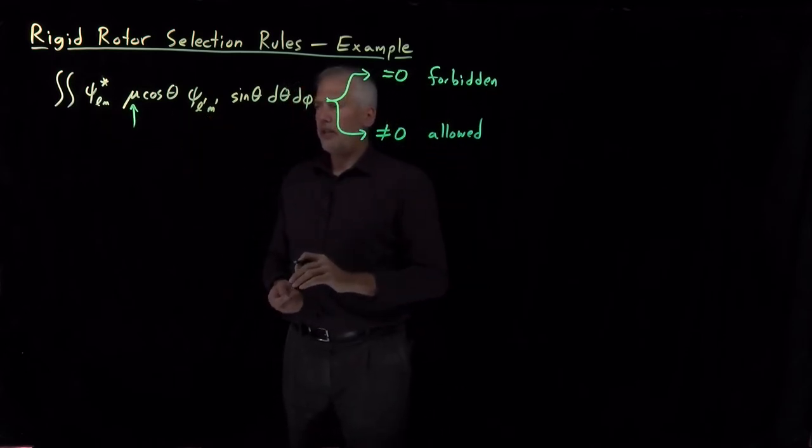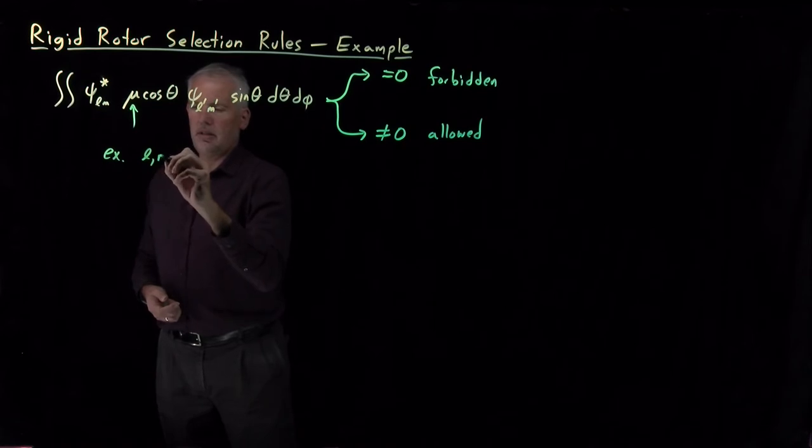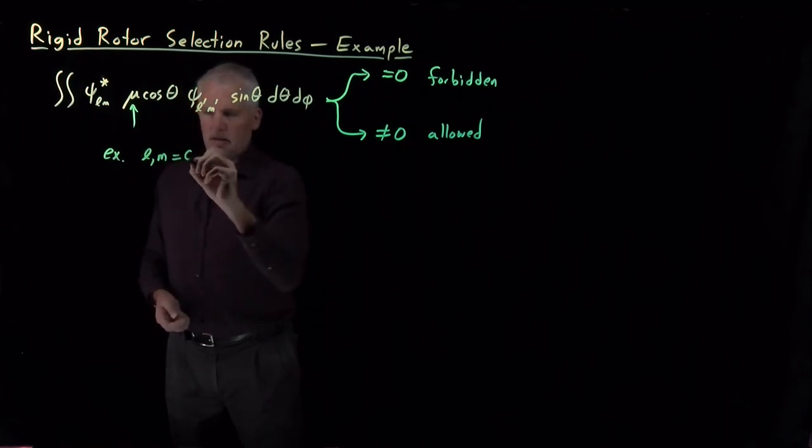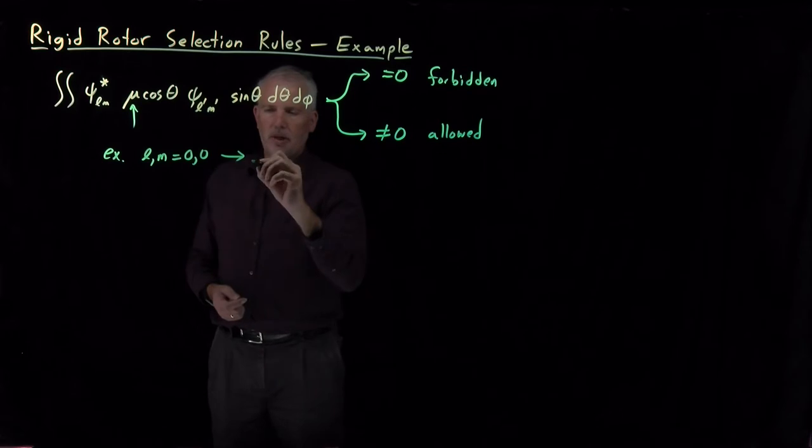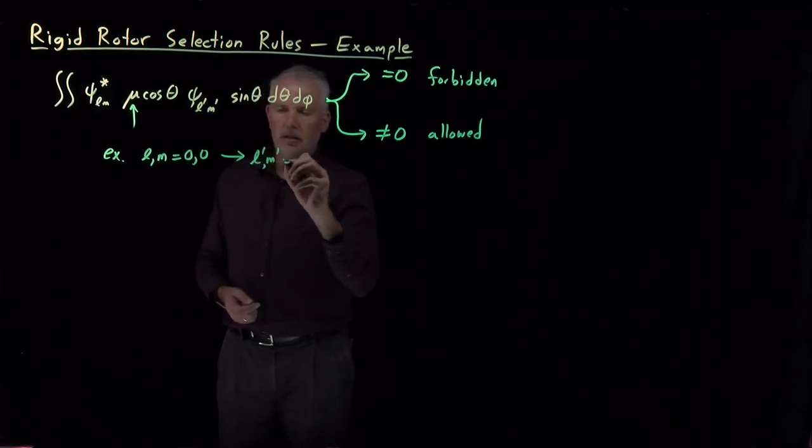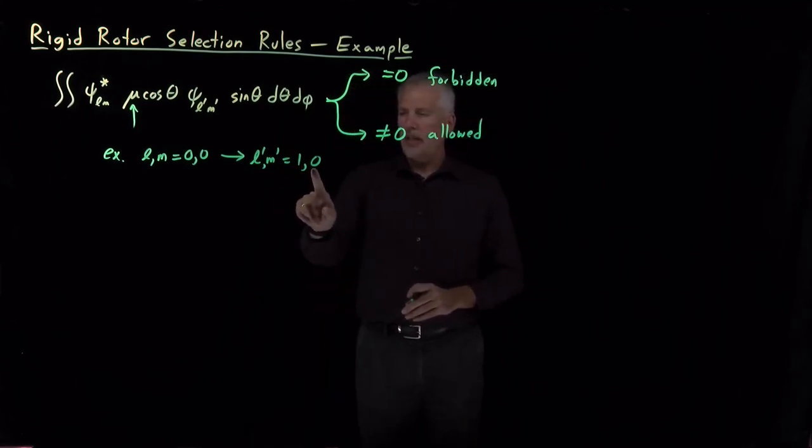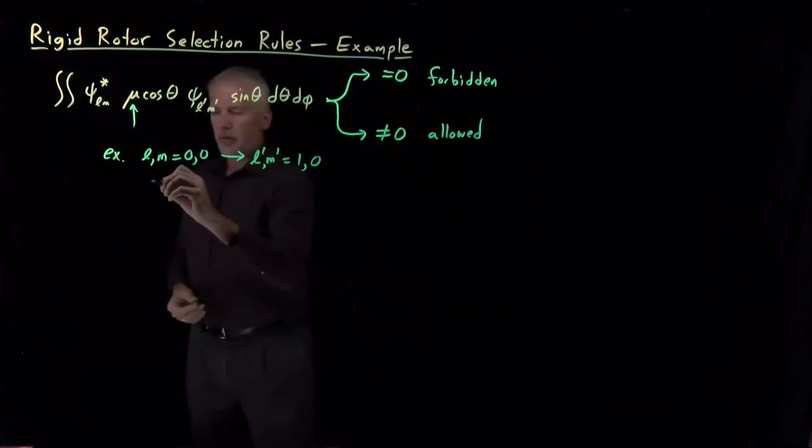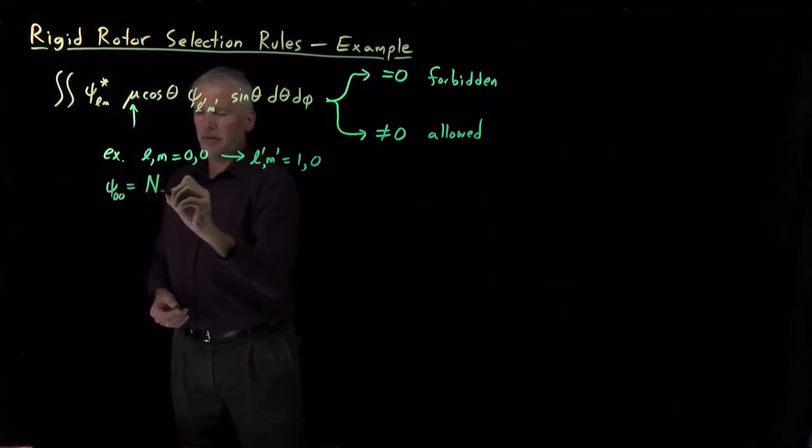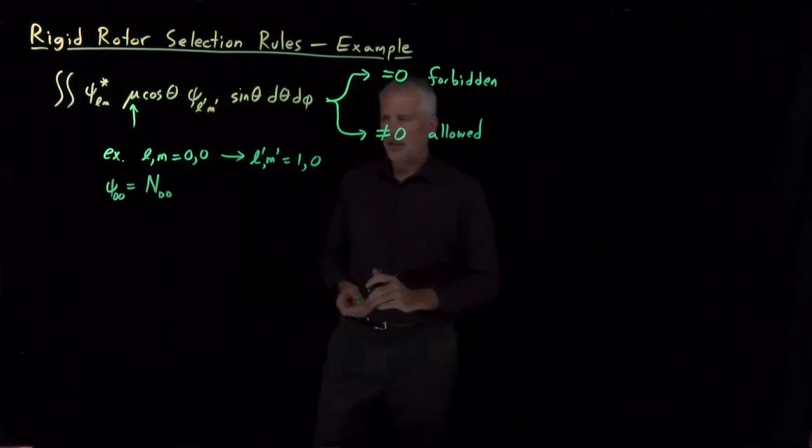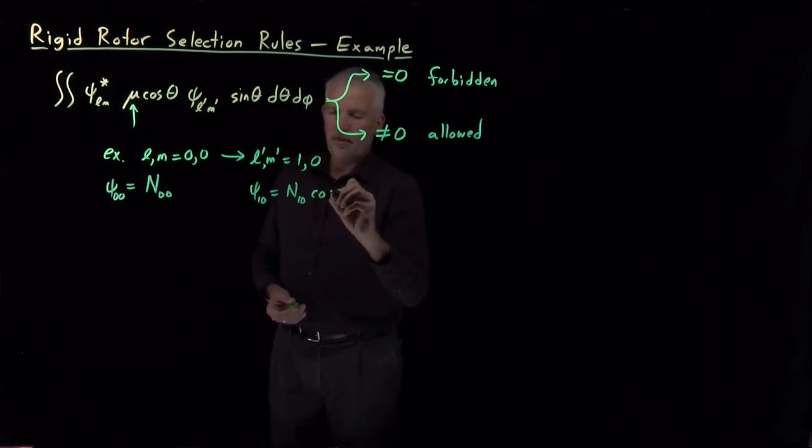So the easiest way to understand that at first is maybe with an example. So let's consider a transition from the zero-zero level, the ground state of the rigid rotor, L equals zero, M equals zero, up to a state, let's say, the one-zero level. Excitation of one quantum number in L and not changing the value of M. If we recall what the rigid rotor wave functions look like, the psi zero-zero wave function is just a constant, some normalization constant. The psi one-zero wave function is a normalization constant, a different constant, times cosine theta.